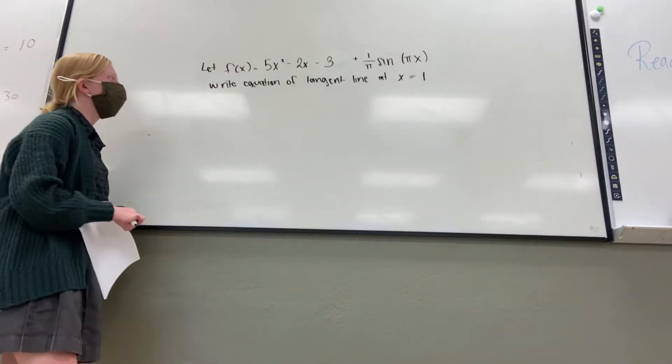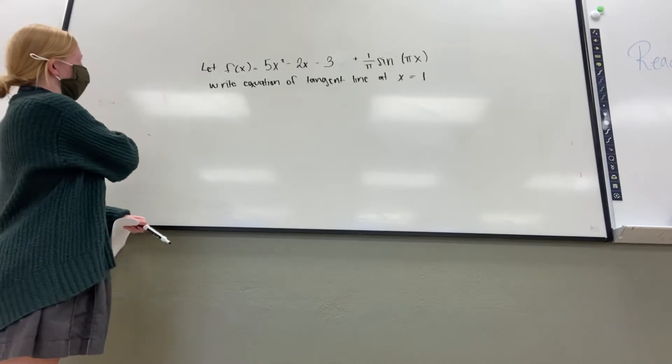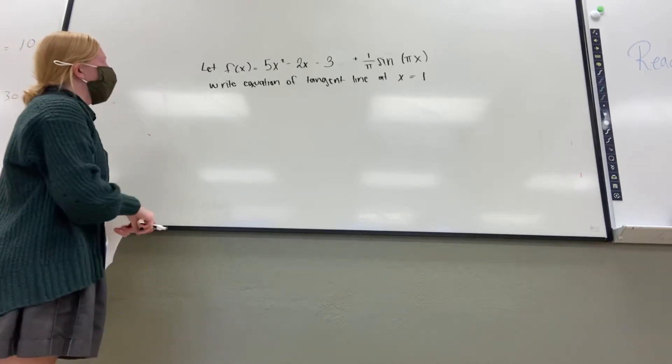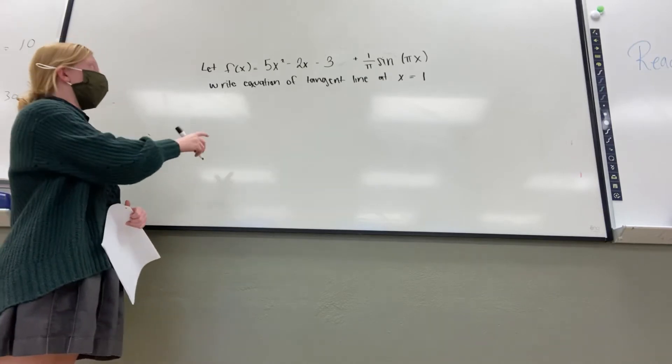We want to write the equation of the tangent line at x equals 1. First we need to find the slope, which you find by getting the derivative of f of x.